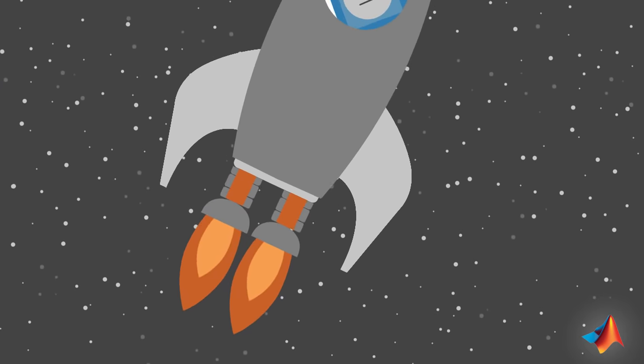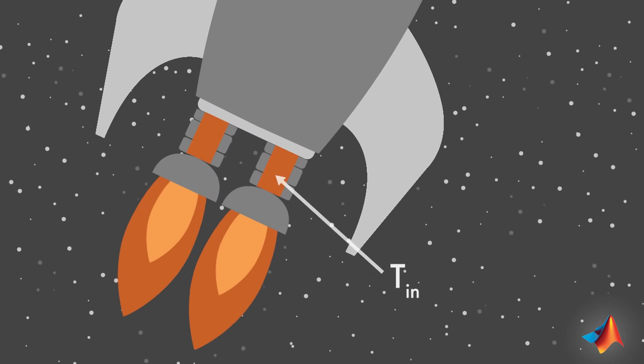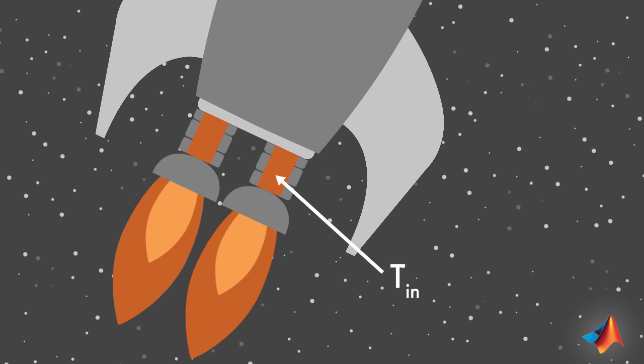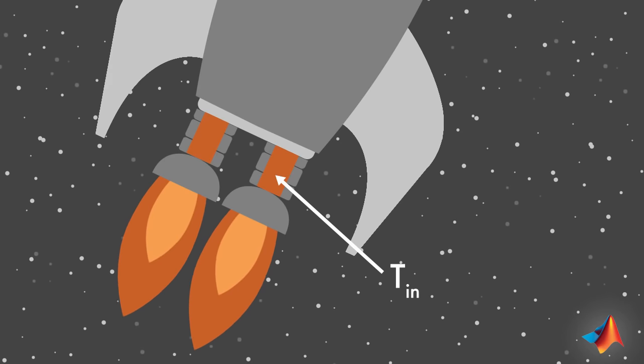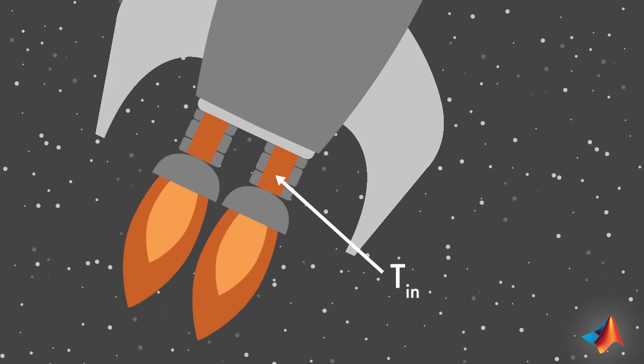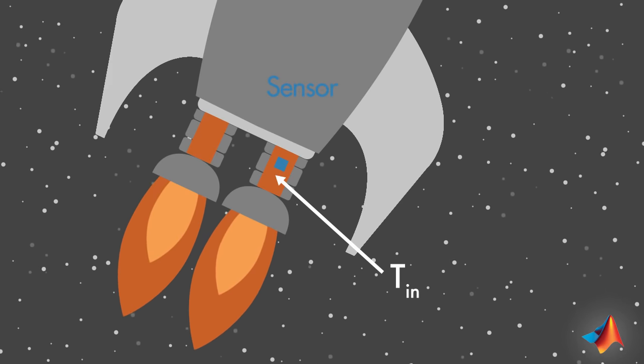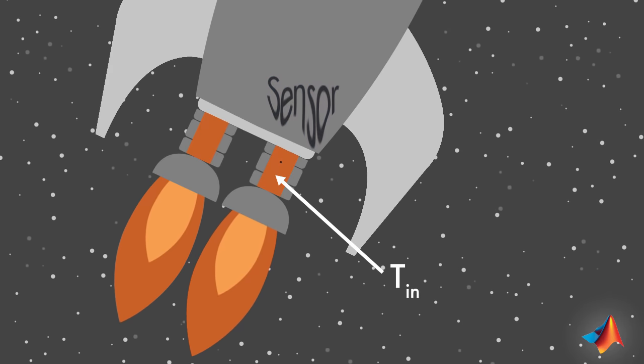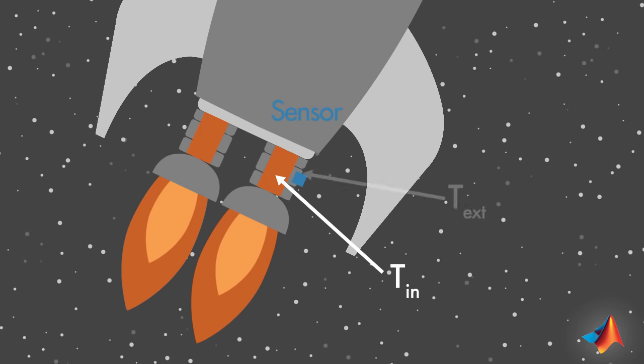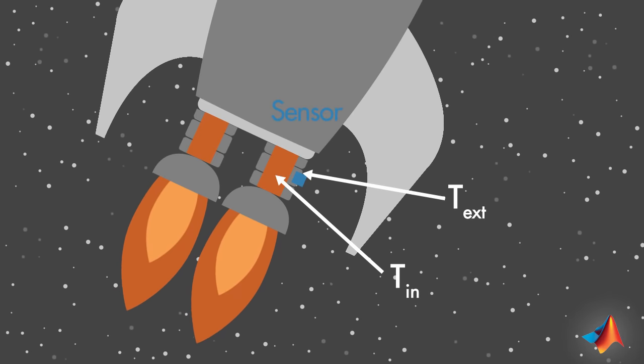To prevent such a situation, you should closely monitor the internal temperature of the combustion chamber. This is not an easy task, since a sensor placed inside the chamber would melt. Instead, it needs to be placed on a cooler surface, close to the chamber.